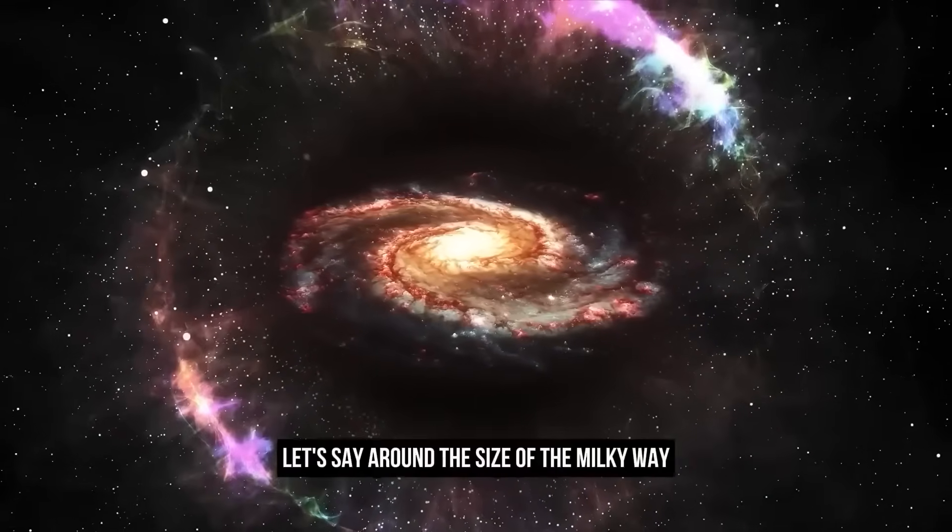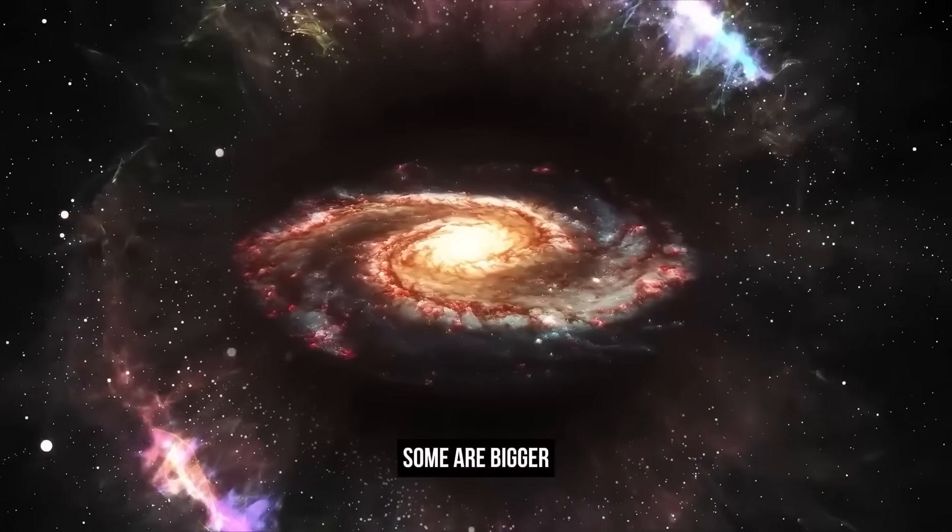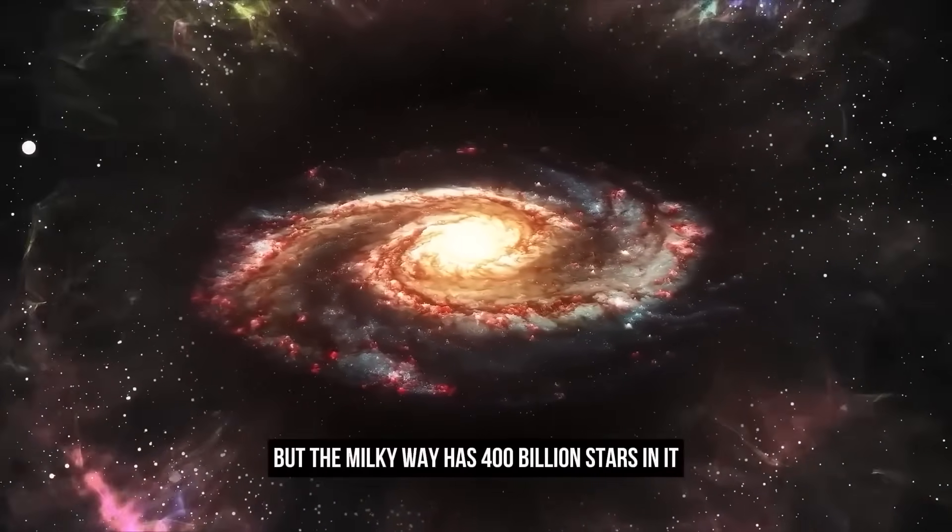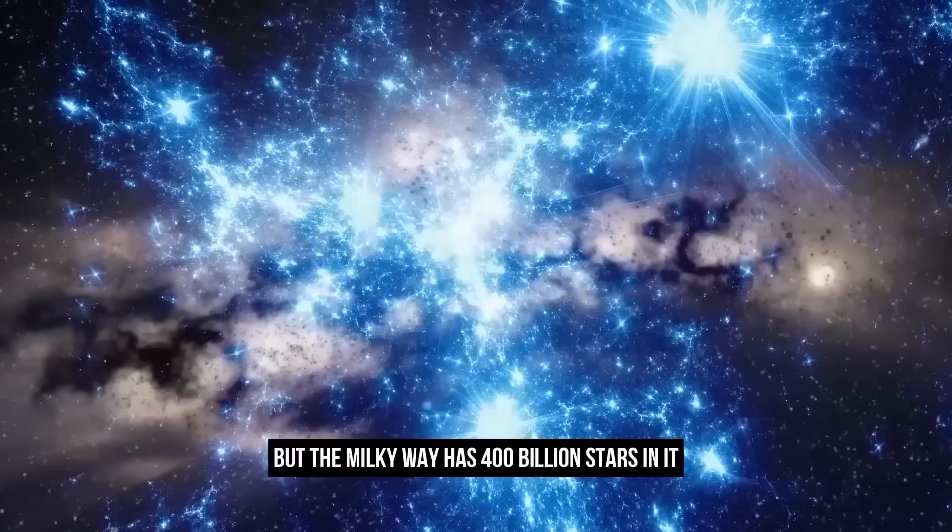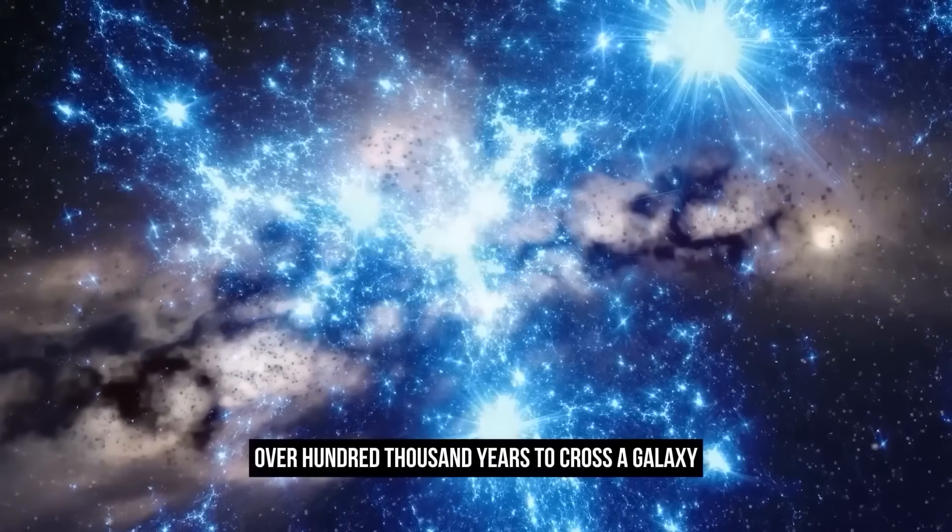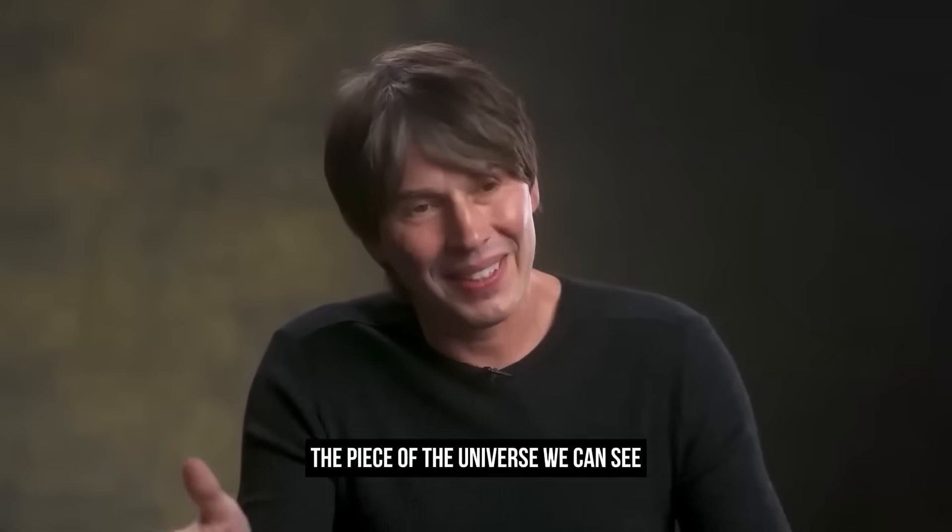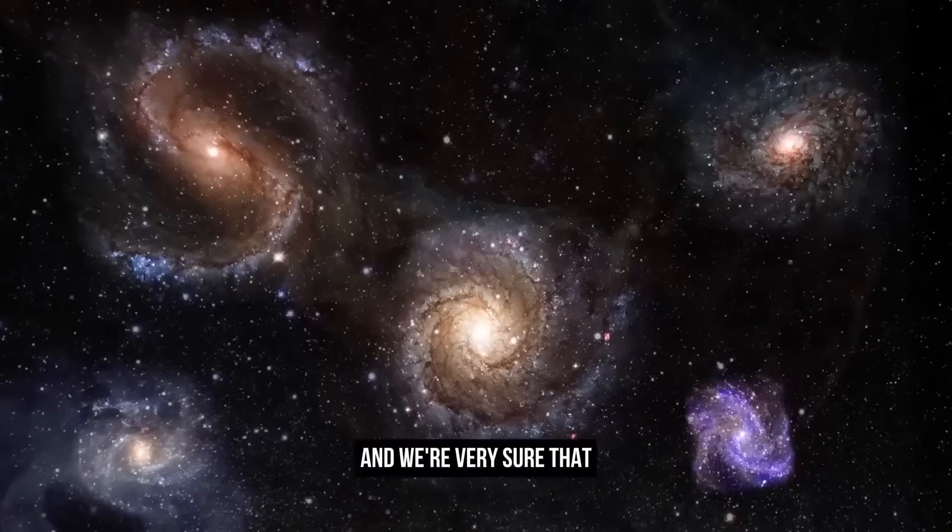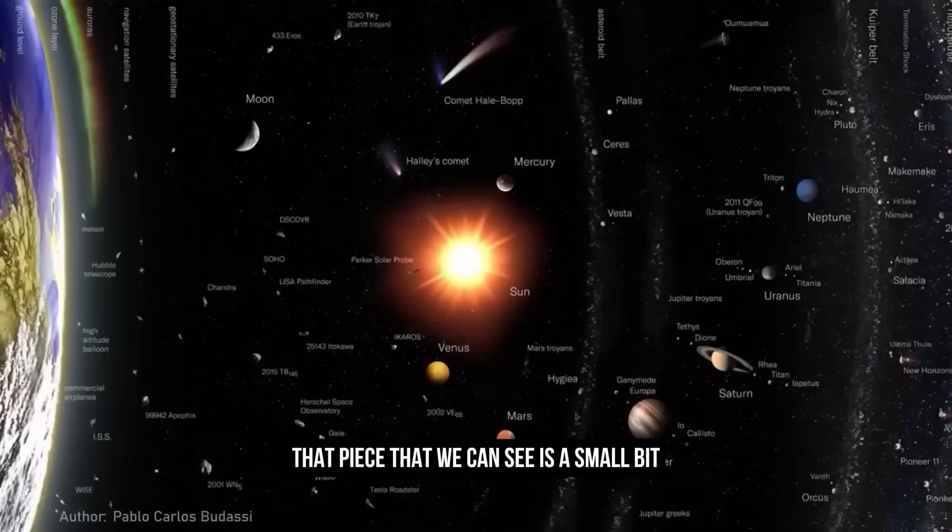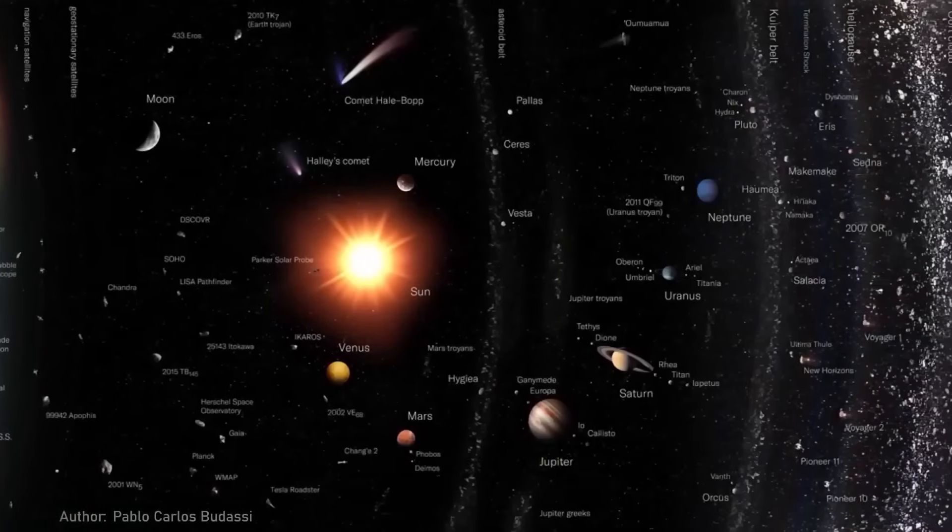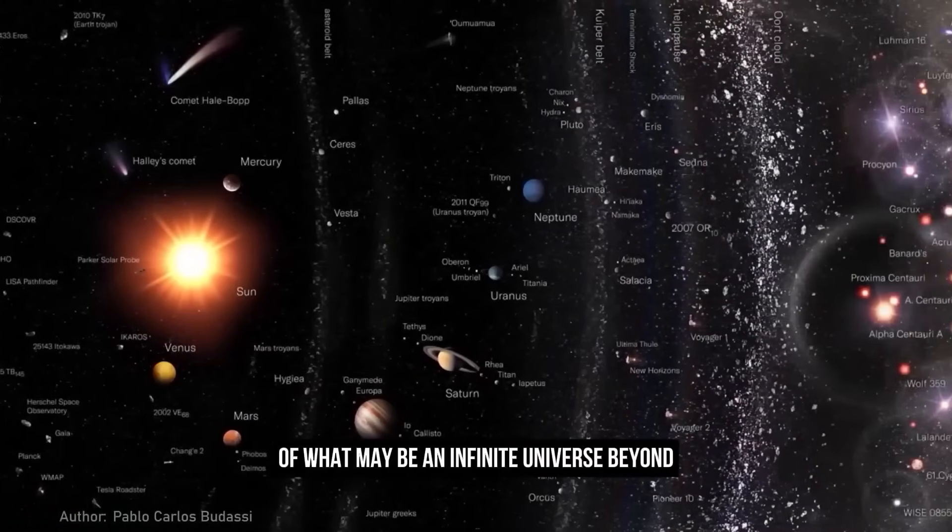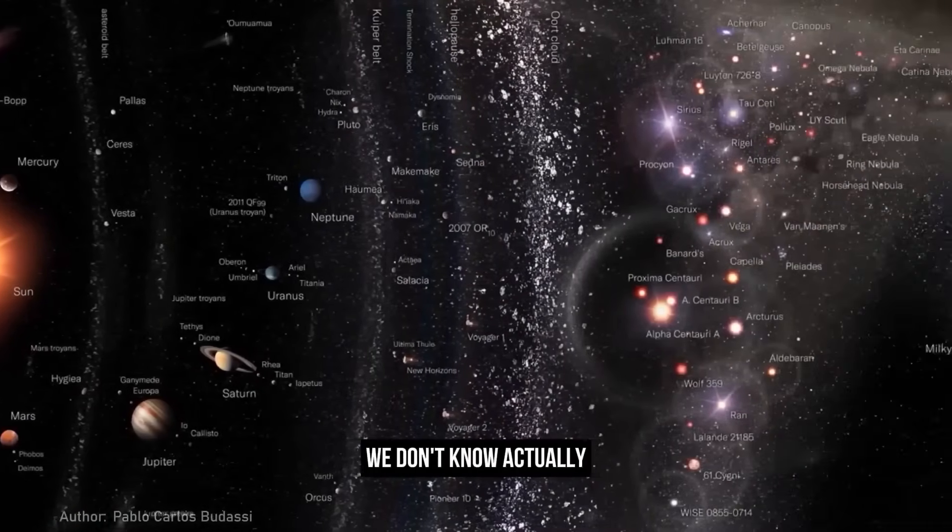Each galaxy is around the size of the Milky Way. Some are bigger, some are smaller. But the Milky Way has 400 billion stars in it. It takes light over 100,000 years to cross a galaxy. And there are two trillion of them in the piece of the universe we can see.